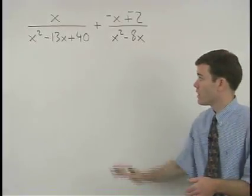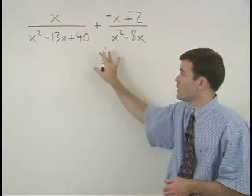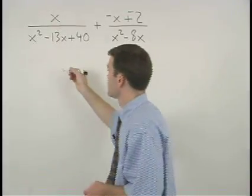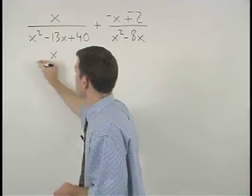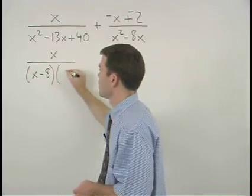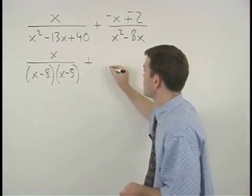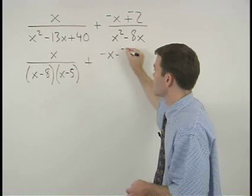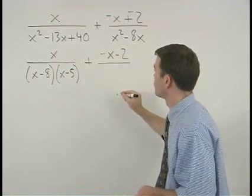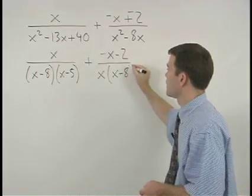And notice that to find our common denominator we must first factor each of the denominators to get x over x minus 8 times x minus 5 plus negative x minus 2 over x times parentheses x minus 8.